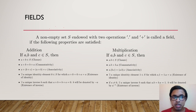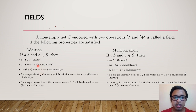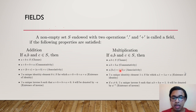Next we have associativity, which shows us the order in which we perform operations is irrelevant. If a, b and c are in S, then adding b and c first and then adding a gives the same result as adding a and b first and then adding c. Similarly for multiplication: multiplying b and c then multiplying by a gives the same as multiplying a and b then multiplying by c.